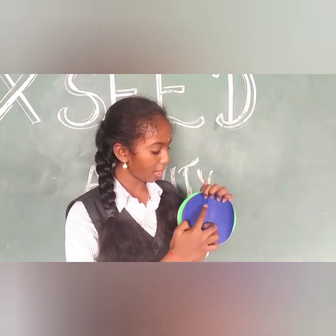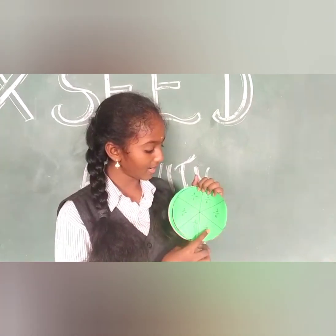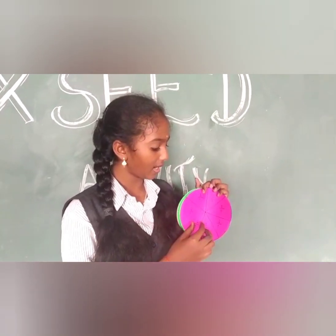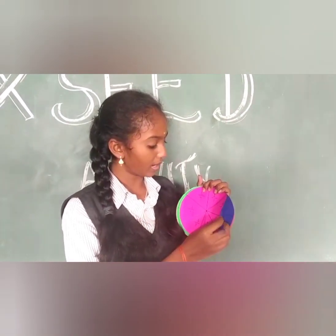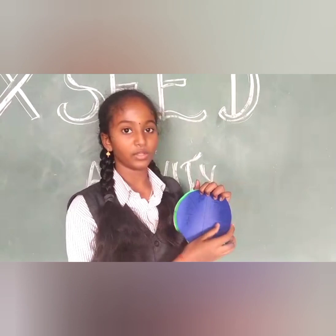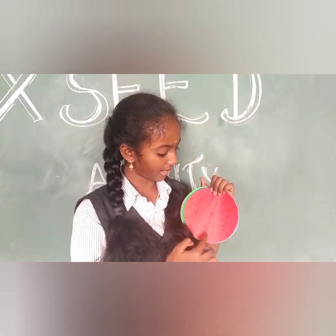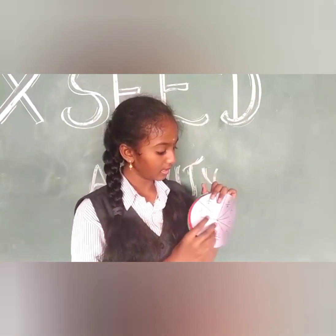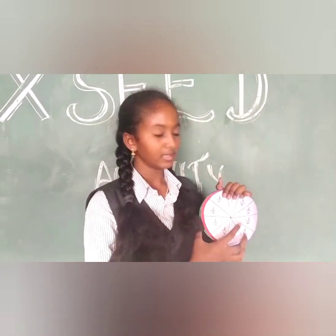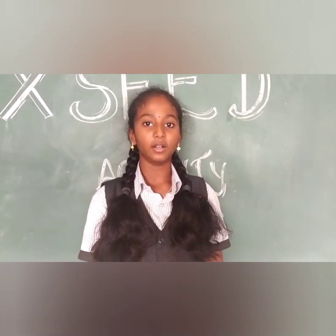There are 5 parts. There are 6 parts, the denominator is 6, so this is 1 by 6. There are 7 parts, the denominator is 7, so this is 1 by 7. There are 8 parts, the denominator is 8, so this is 1 by 8. There are 9 parts, the denominator is 9, so this is 1 by 9. There are 10 parts, the denominator is the same, so this is 1 by 10. These are the like fractions.